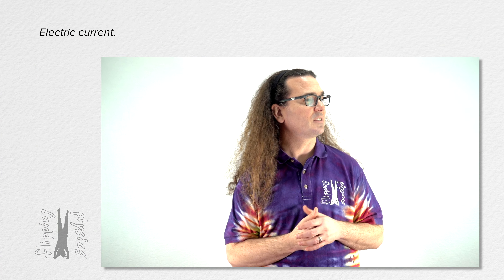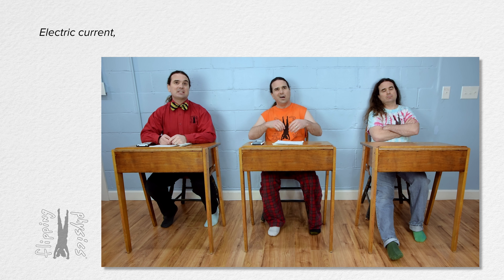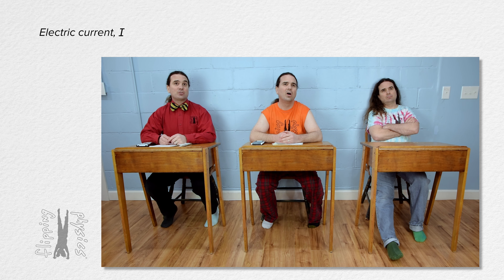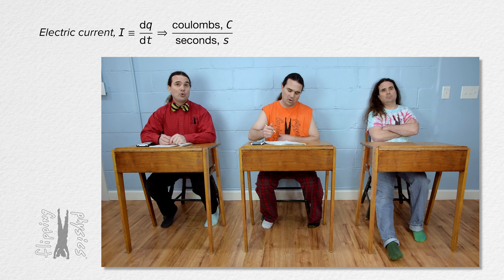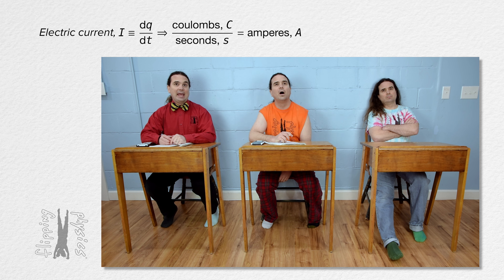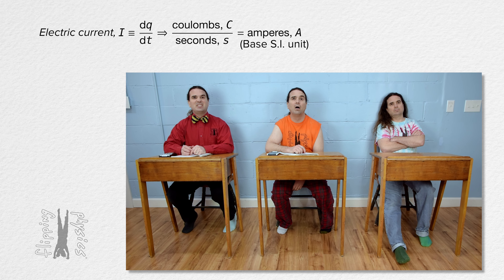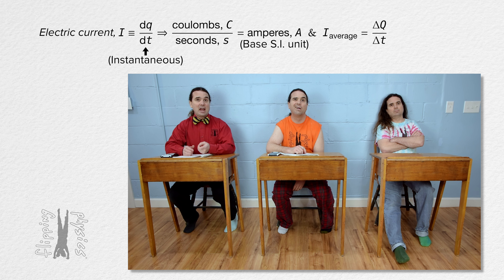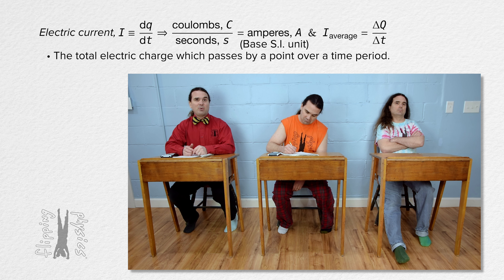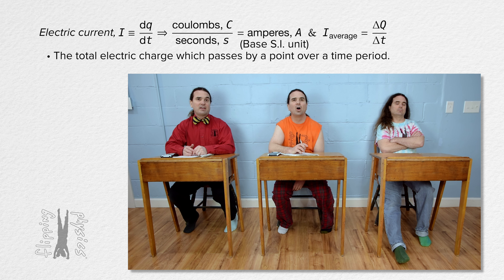Tell me about electric current. The symbol for electric current is capital I. Current is defined as the derivative of charge with respect to time. It has units of coulombs per second, which are called amperes, and the symbol for amps is capital A. Amperes are a base SI unit. This is instantaneous electric current. Average current is the change in charge over change in time.